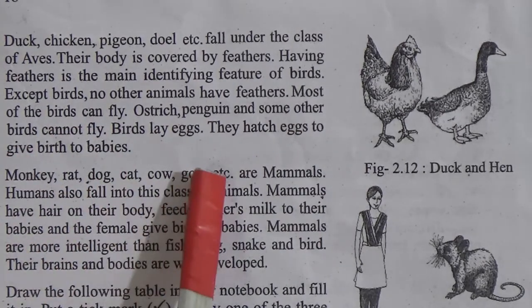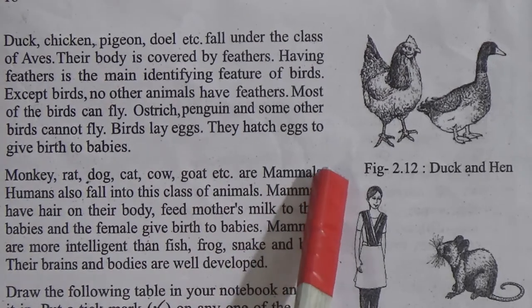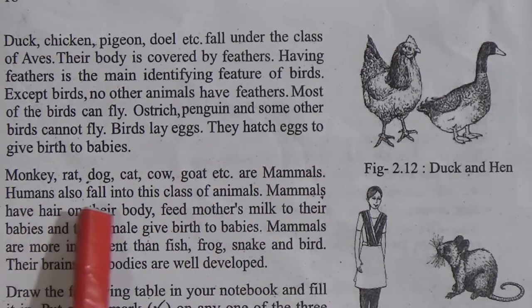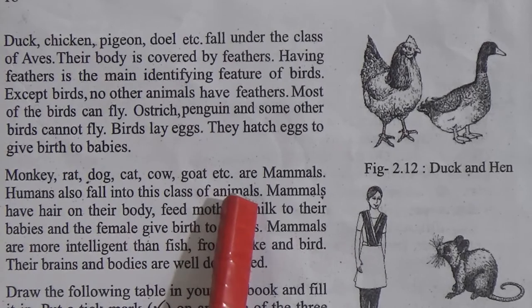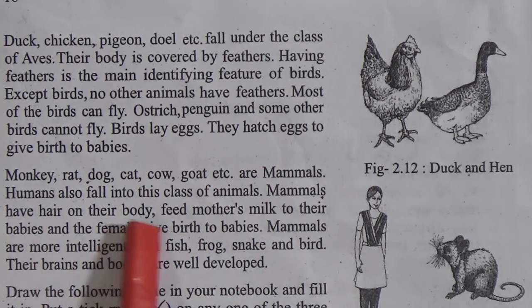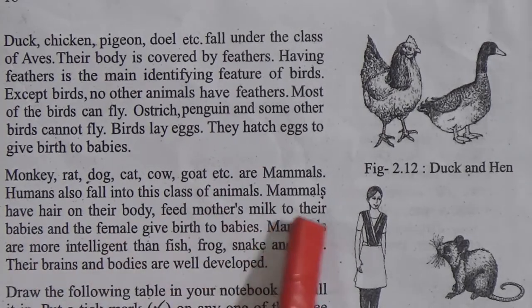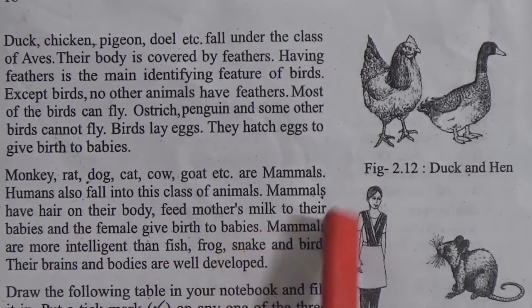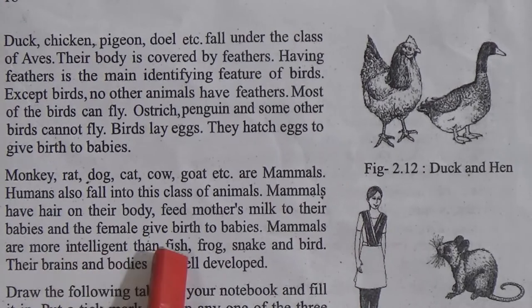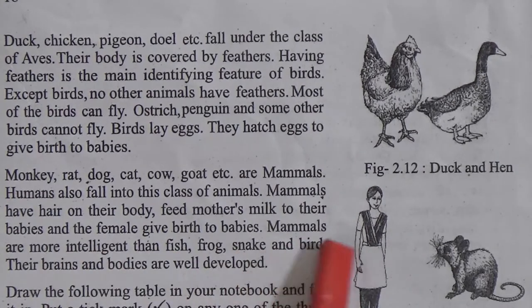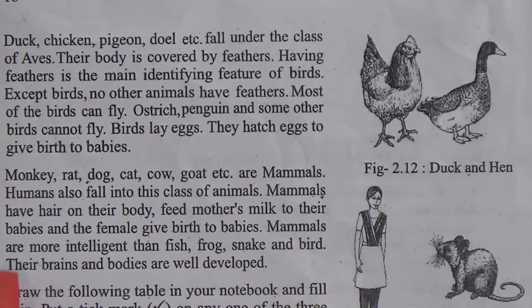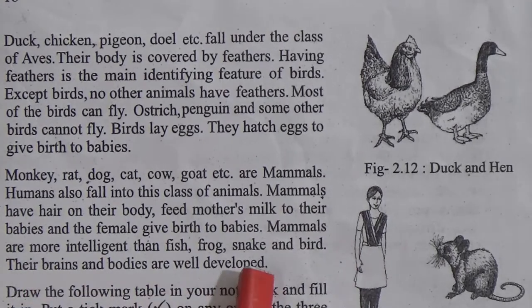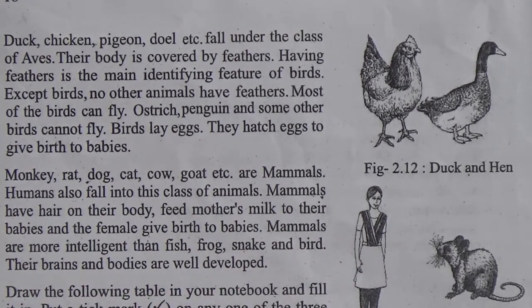Monkeys, rats, dogs, cats, goats, etc. are mammals. Humans also fall into this class of animals. Mammals have hair on their body, feed their babies with mother's milk, and the females give birth to live babies. Mammals are more intelligent than fish, frogs, snakes and birds. Their brains and bodies are well developed.